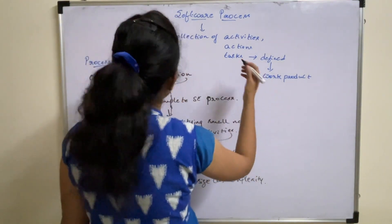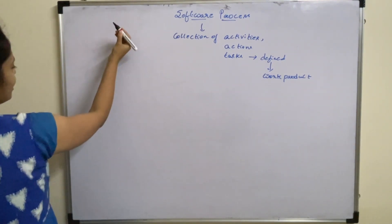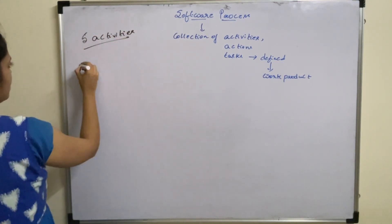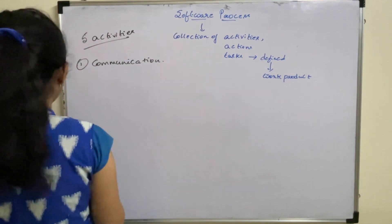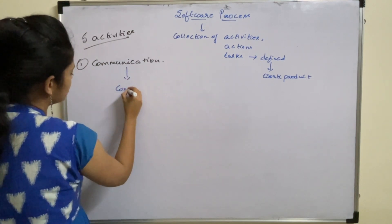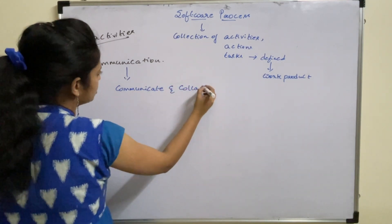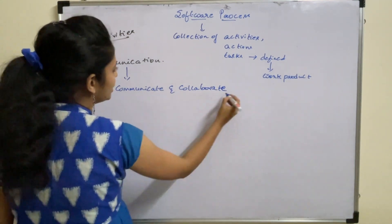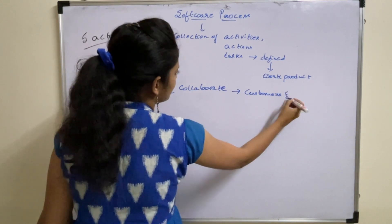A framework can be defined using 5 different activities — the general framework encompasses 5 activities. The first activity is communication. In order to perform any technical task, first communicate and collaborate with the customers and stakeholders.